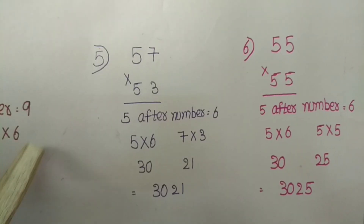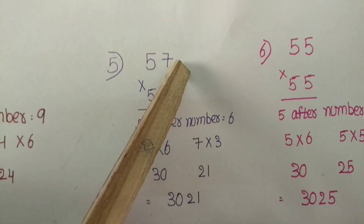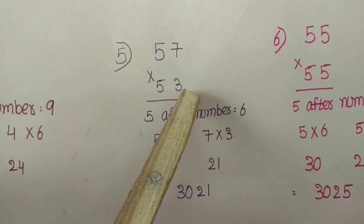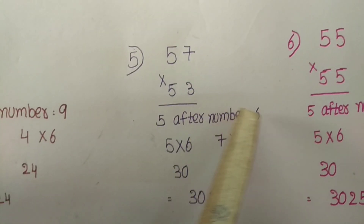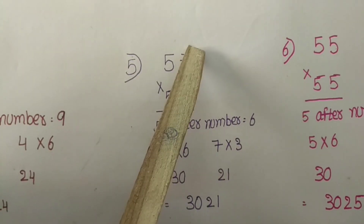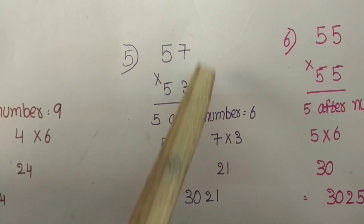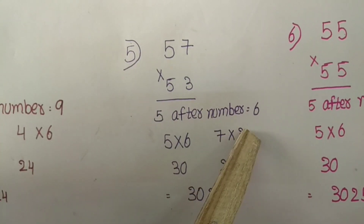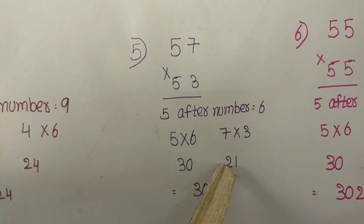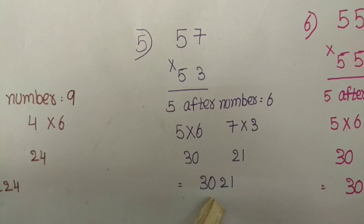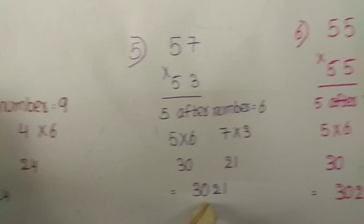Another example: 57 into 53. The tens digit 5, the next number is 6. 5 into 6 is the first part. 7 into 3 is equal to 21. Now the answer is 3021.